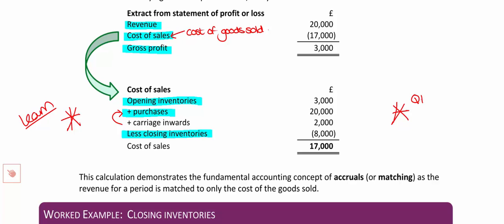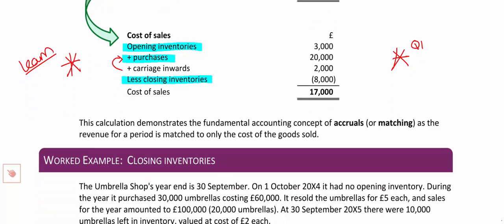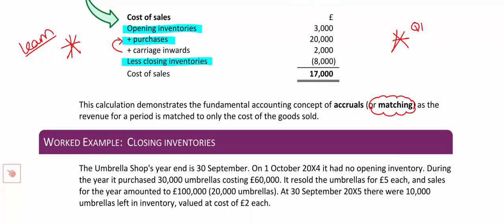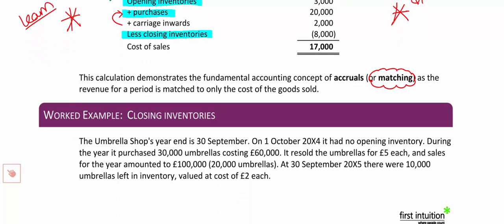I can pretty much guarantee you'll need to do that calculation in your long form question one, using our purchases and inventories to get the cost of what we've sold. But why do we need to calculate cost of sales in this way? The best way to see it in action is to show you a quick example where we start by getting it wrong, and as we build it up, you'll see that the whole point of that cost of sales working is to match to revenue the cost of the same units that we've sold.